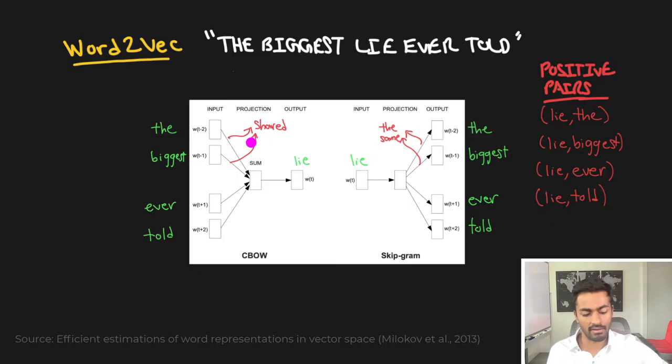This vector should be a representation of the word 'the.' It's shared because we do the exact same thing over here where we have the same exact matrix of 100 × 256 and we multiply with this to get another 1 × 256 dimensional vector called 'biggest.' Same with 'ever' and 'told.' So we have four of these dense vectors which we take the sum of in order to get the final projection of 1 × 256.